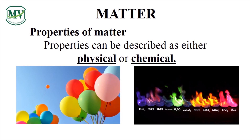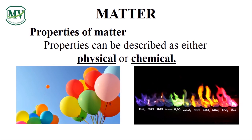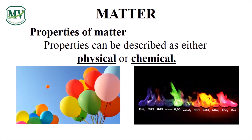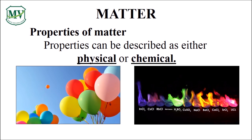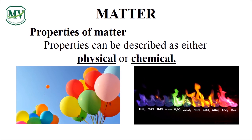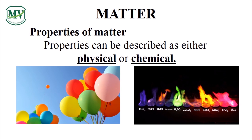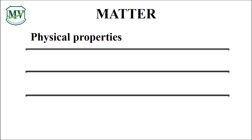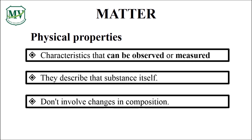For example, the balloon — color is its physical property. And for flames, flammability is a chemical property. Physical properties can be observed, they can be measured, they describe the substance itself, and they don't involve changes in composition.